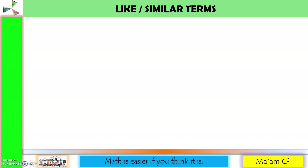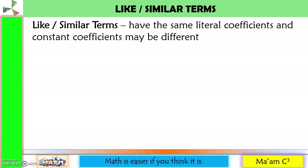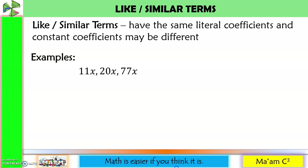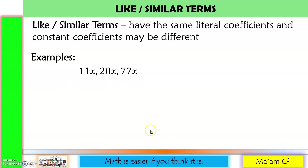Now let us talk about like or similar terms. These are terms that have the same literal coefficients, and the constant coefficients may be different. Examples: 11x, 20x, 77x. Just look at the literal coefficients — if they are exactly the same, then they are like or similar terms. The literal coefficient here is x, here is x, and here is x. Therefore, similar terms. Never mind the constant coefficients, just take a look at the literal coefficients.